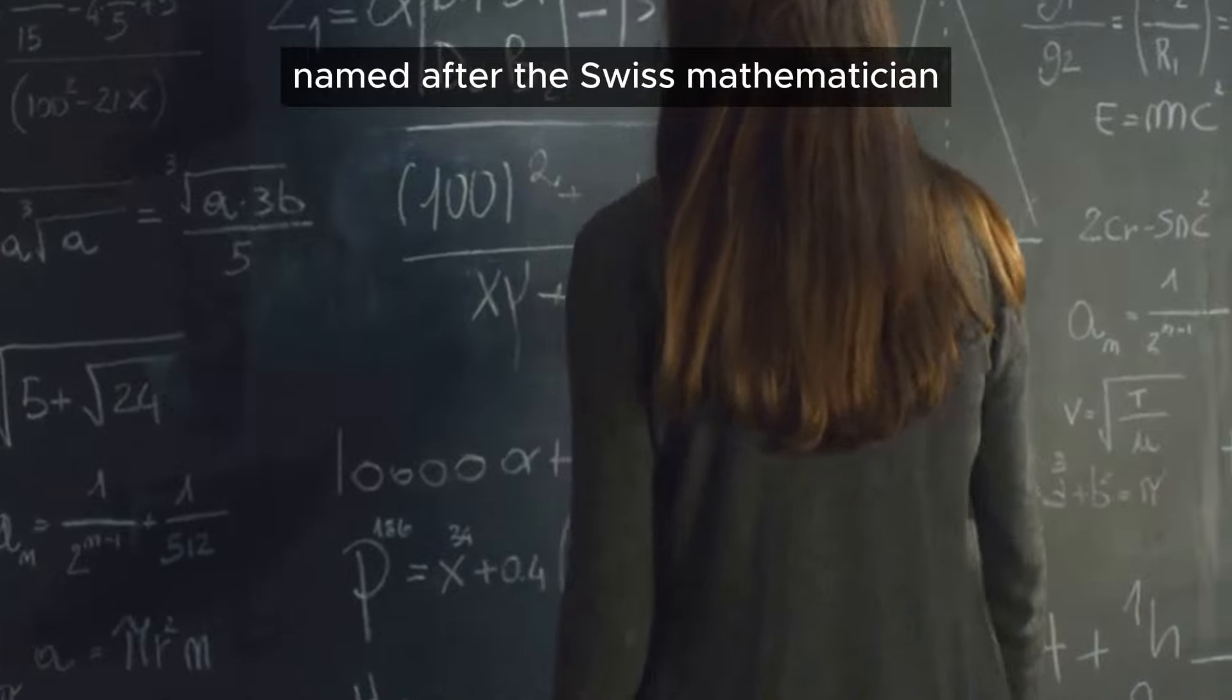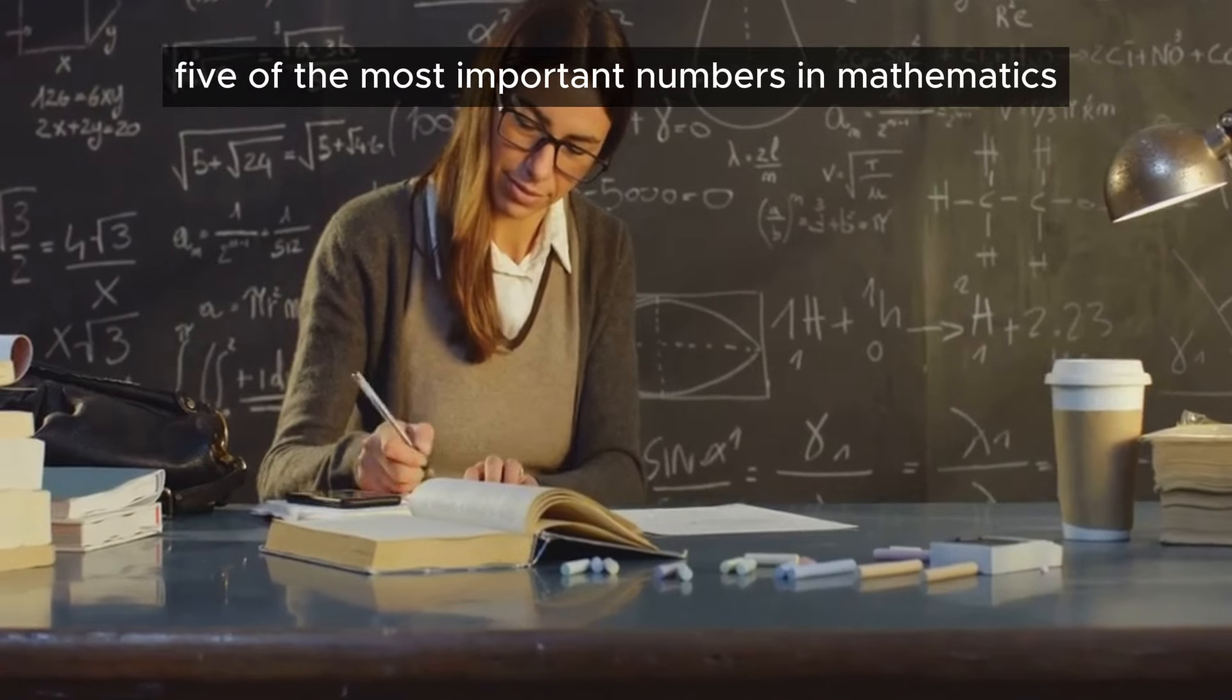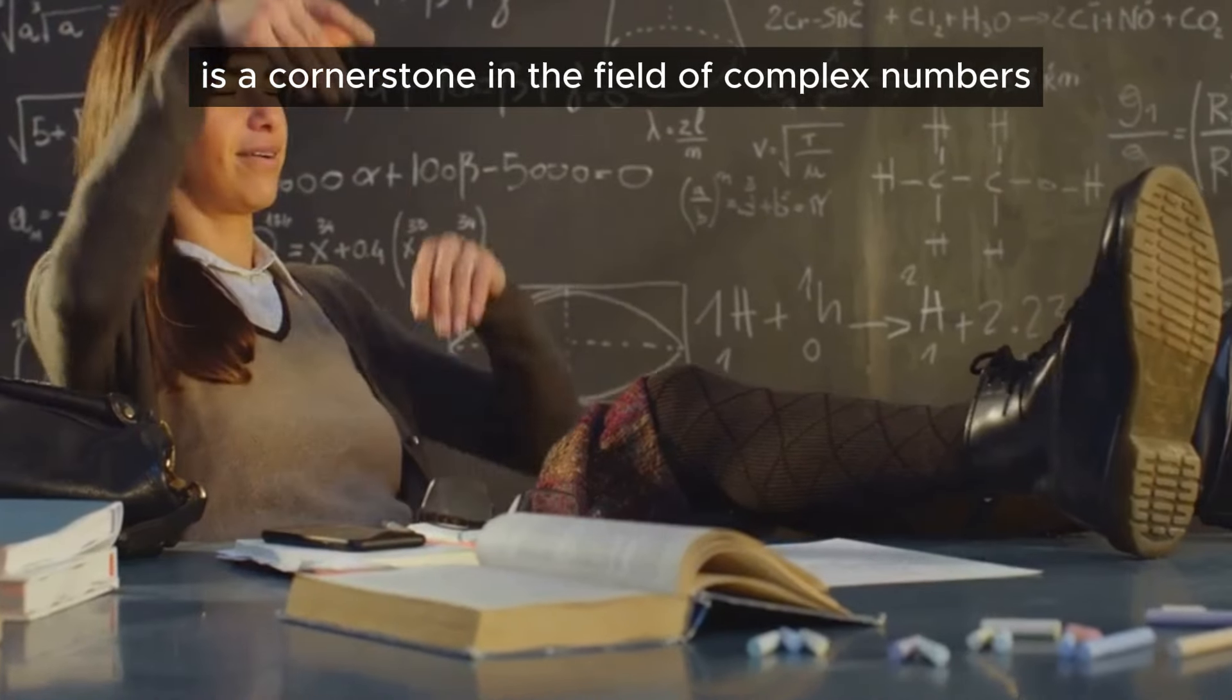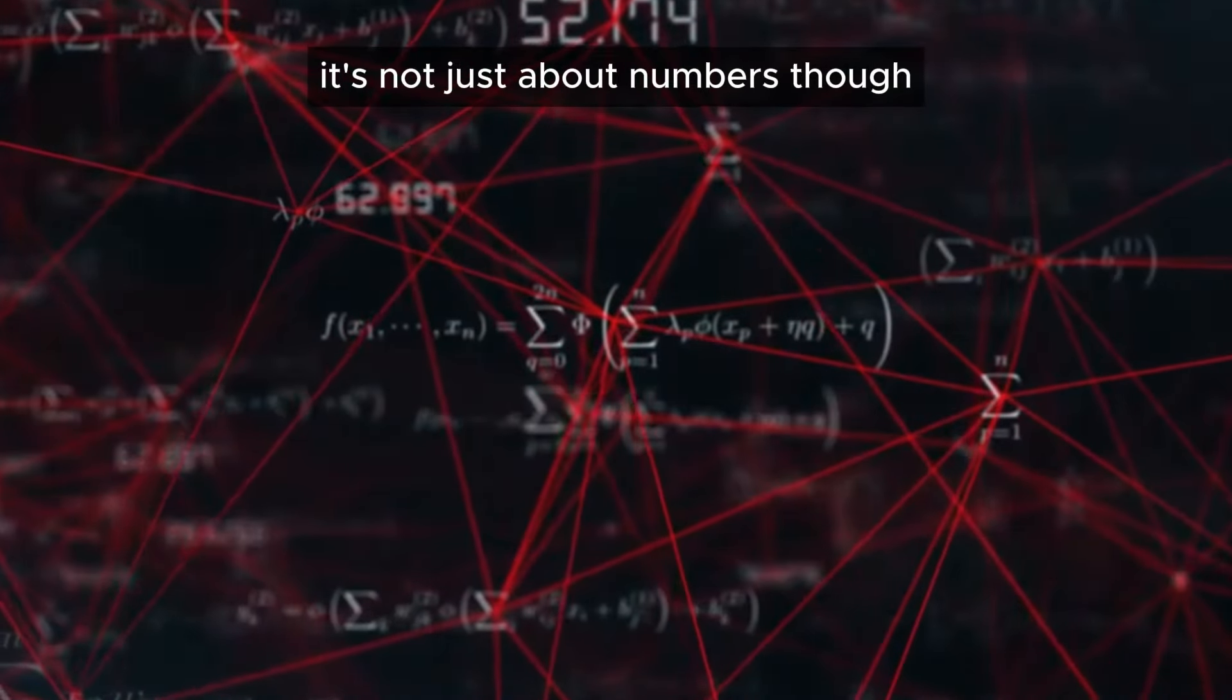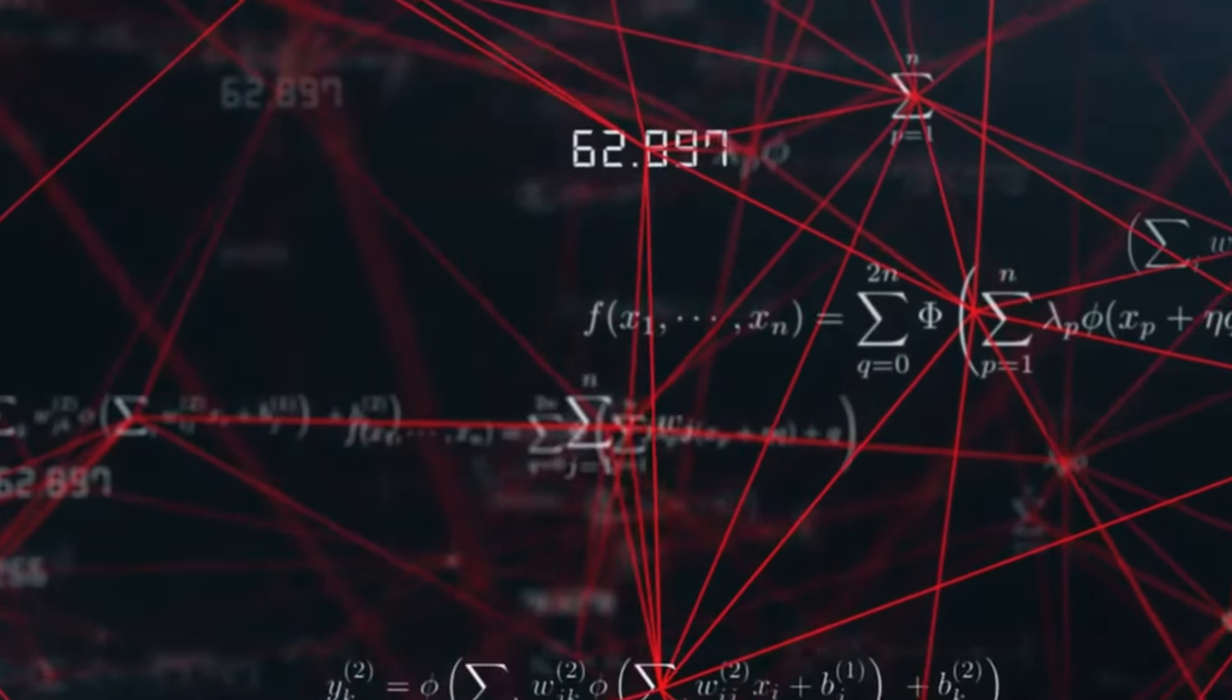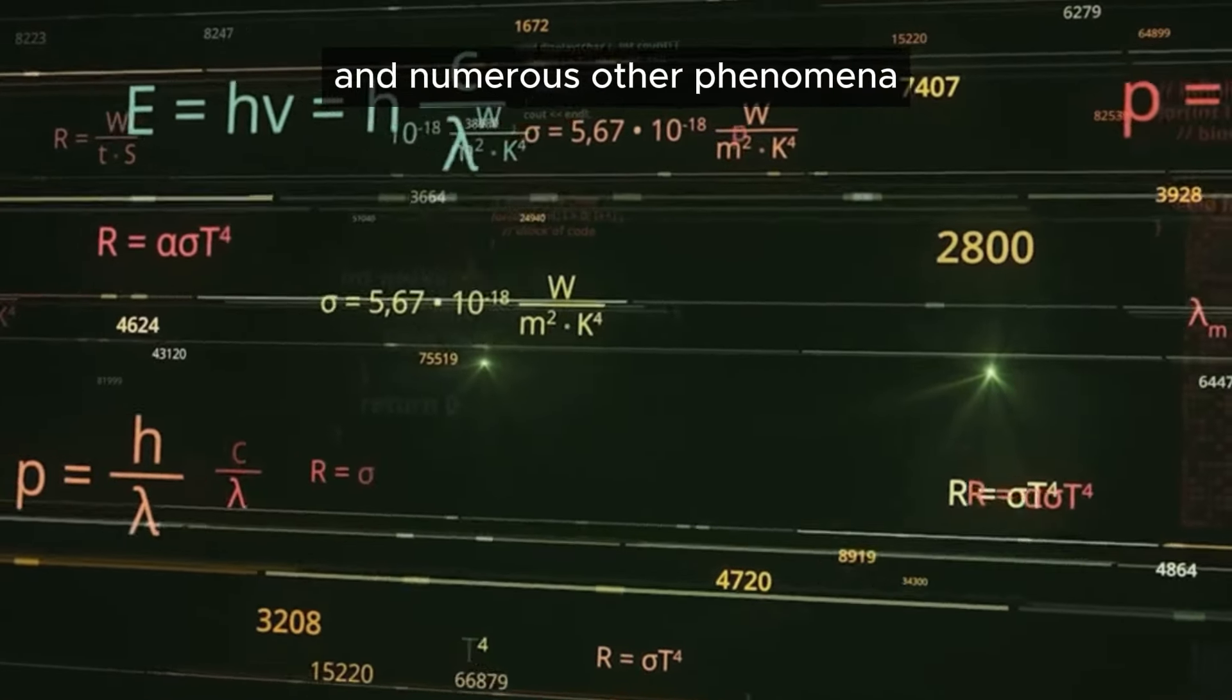Then we have Euler's formula, named after the Swiss mathematician Leonhard Euler. This formula, which beautifully combines five of the most important numbers in mathematics into a single equation, is a cornerstone in the field of complex numbers. It's not just about numbers, though. Euler's formula has far-reaching implications, impacting everything from electrical engineering to quantum physics, lending a hand in our understanding of waves, oscillations, and numerous other phenomena.